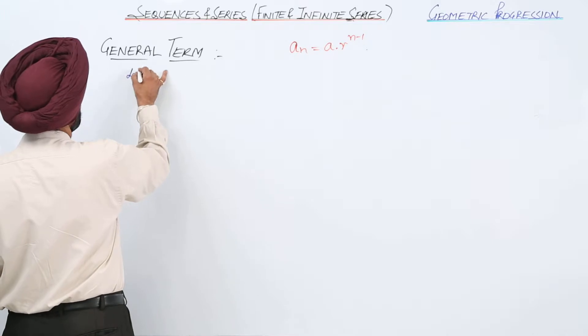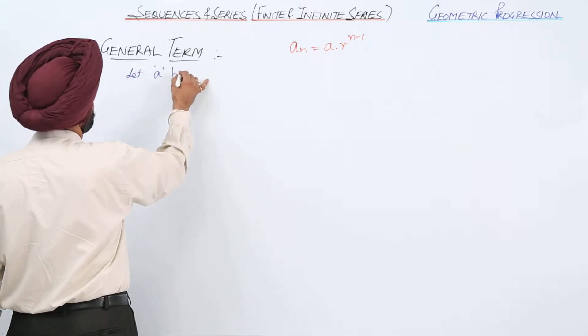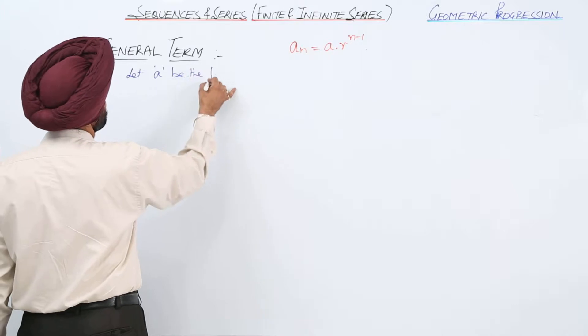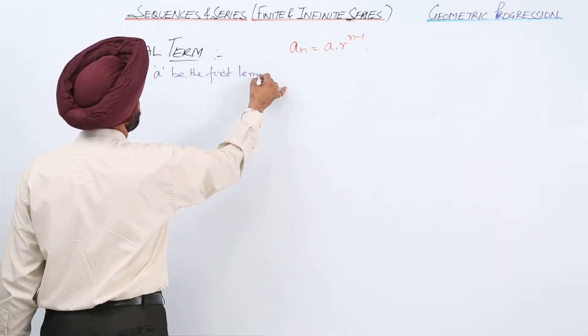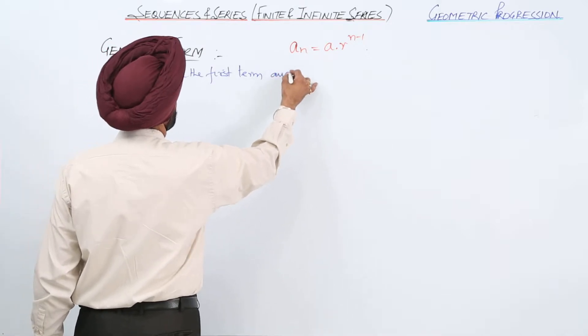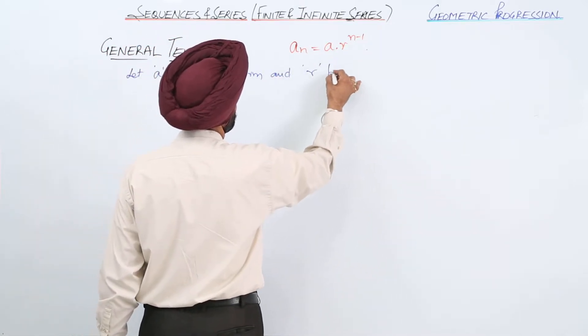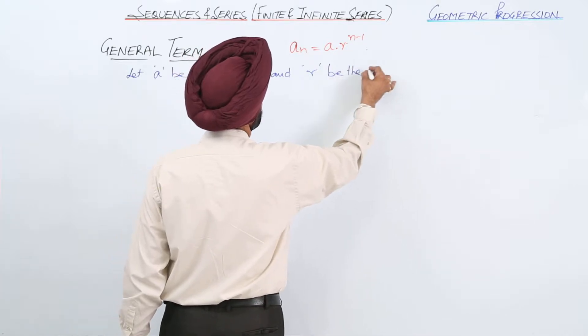Let small a be the first term and small r be the common ratio of a geometric progression series.